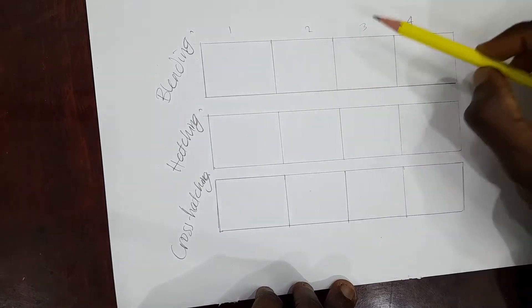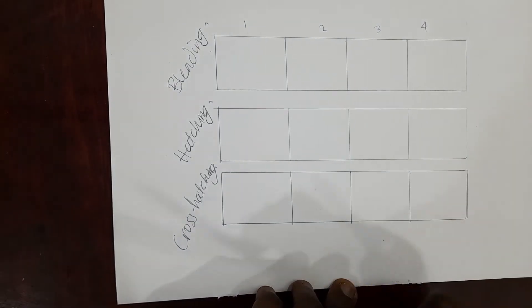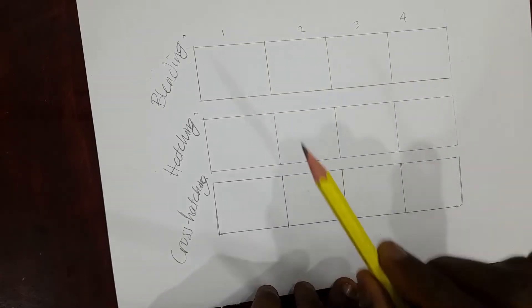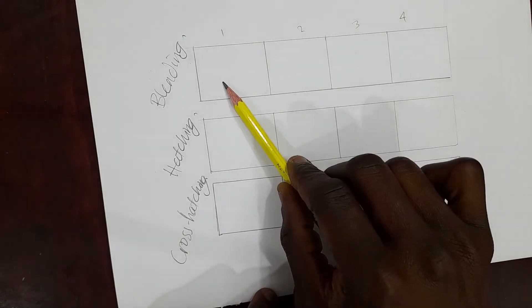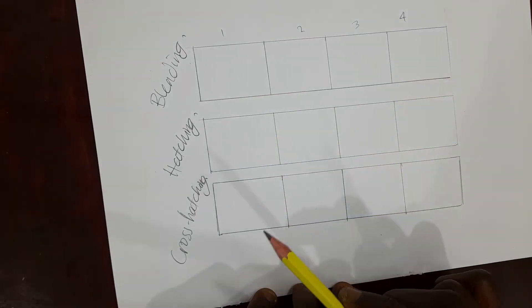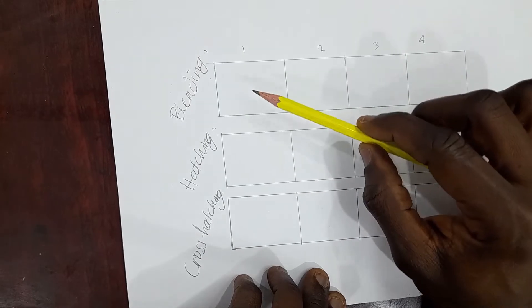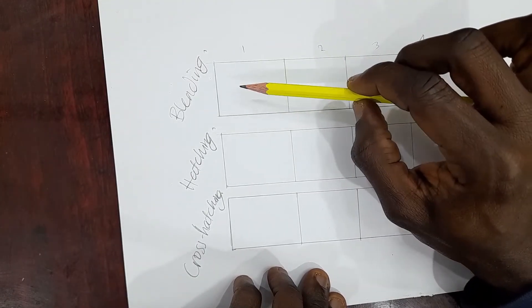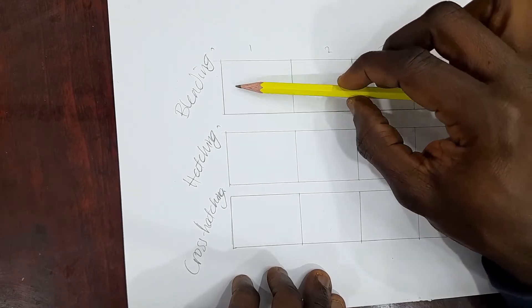I know a lot of times many teachers or artists start from the darkest tone, but today I want to go from the lightest tone to the darkest tone. Don't forget you're going to use the overhand grip on your pencil because you want to use the side of the pencil.